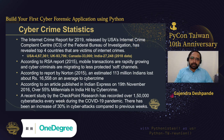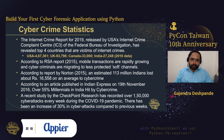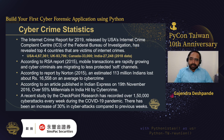Let us first see some statistics related to cyber crime. The Internet Crime Report for 2019, released by the USA's Internet Crime Complaint Center or the FBI, revealed the top four countries that are victims of internet crimes: the US with more than 460,000 crimes reported, followed by the UK with more than 90,000, Canada with more than 30,000, and India with more than 25,000. Of course, these are only the reported numbers but unreported numbers can be much higher.